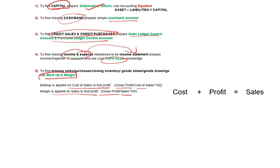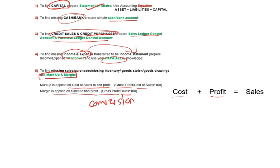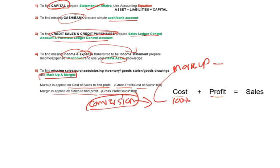Before that, you should understand the relationship: cost plus profit equals sales. For the conversion of markup and margin — if it is markup, we always assume our cost is one hundred percent. So if markup profit is twenty percent, your sales would be one hundred and twenty percent.